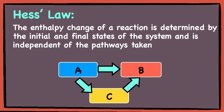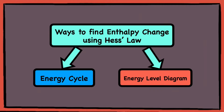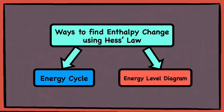The reason why we need to learn Hess's law is so that we can find the enthalpy change of a reaction. There are two methods to do this, namely through the use of energy cycles and energy level diagrams. But for this video, I just want to focus on how to construct energy cycles and I will illustrate it using two worked examples, so do make sure that you watch the entire video to the very end.